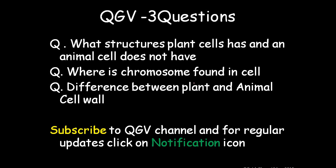Coming to the QGlans video questions: What structures does a plant cell have that an animal cell does not? Where is the chromosome found in the cell? What is the difference between plant cell and animal cell walls? You can subscribe to the QGlans video channel and click the notification icon so that you are always updated on future uploads. Thank you.